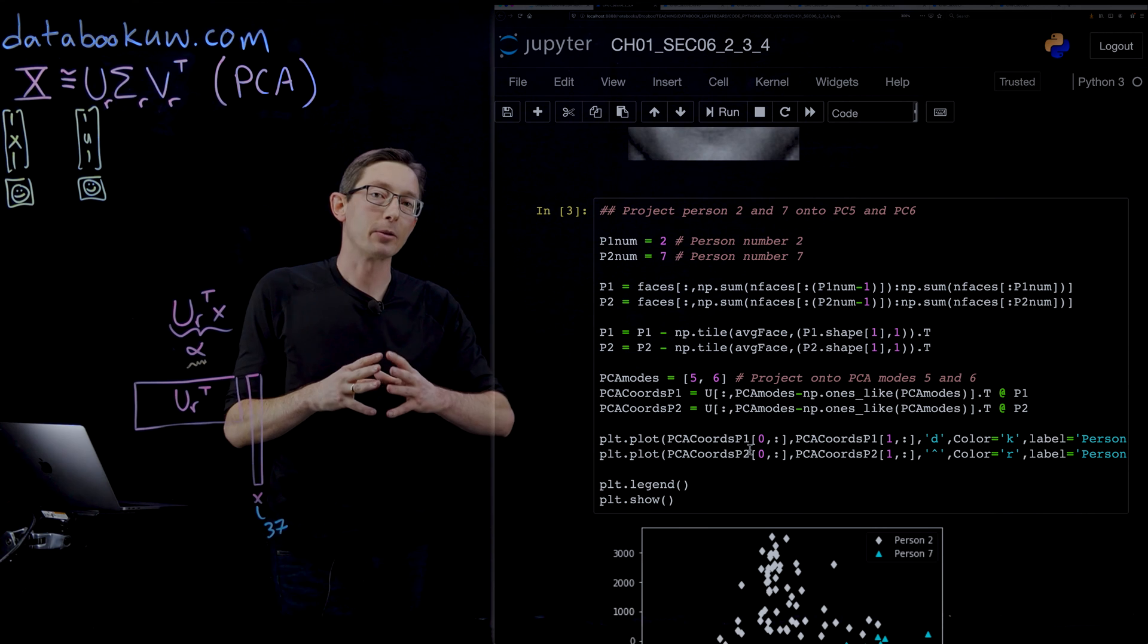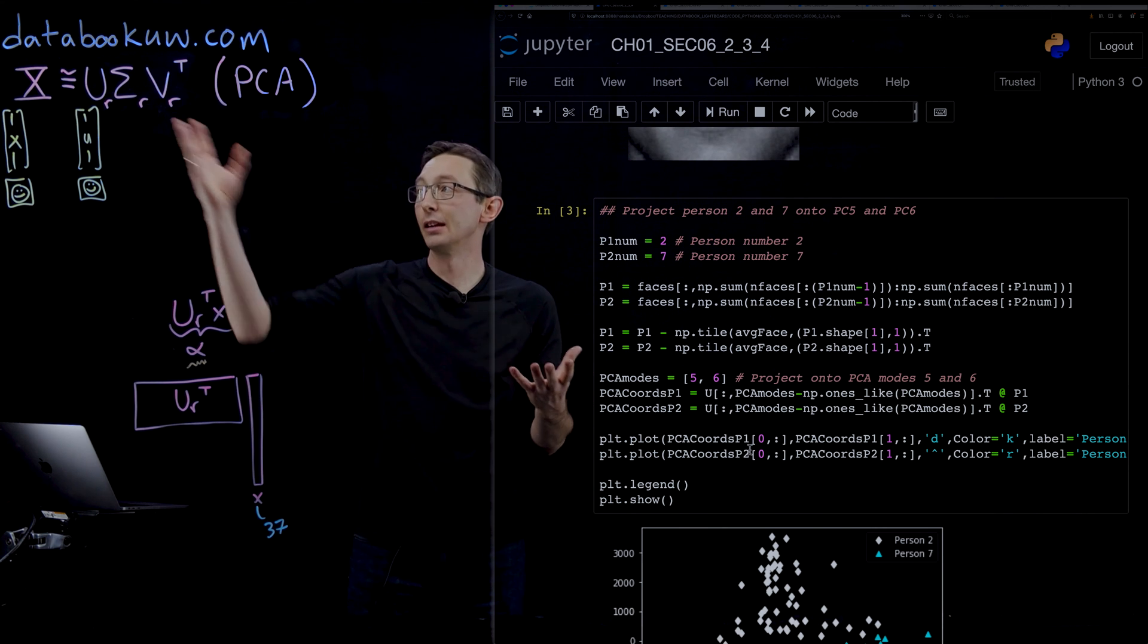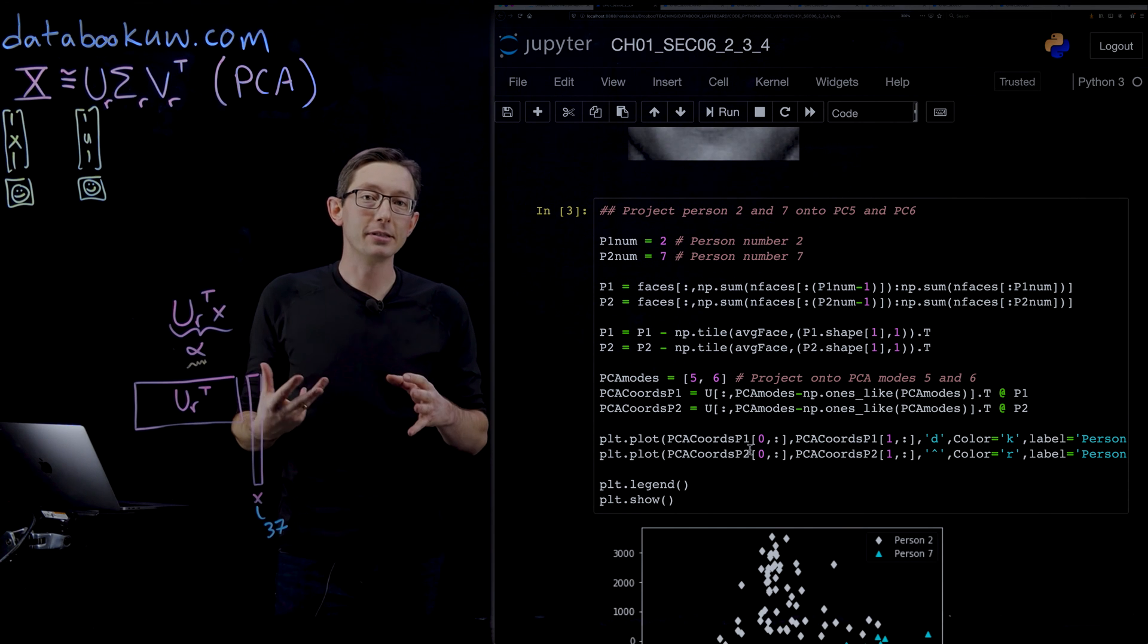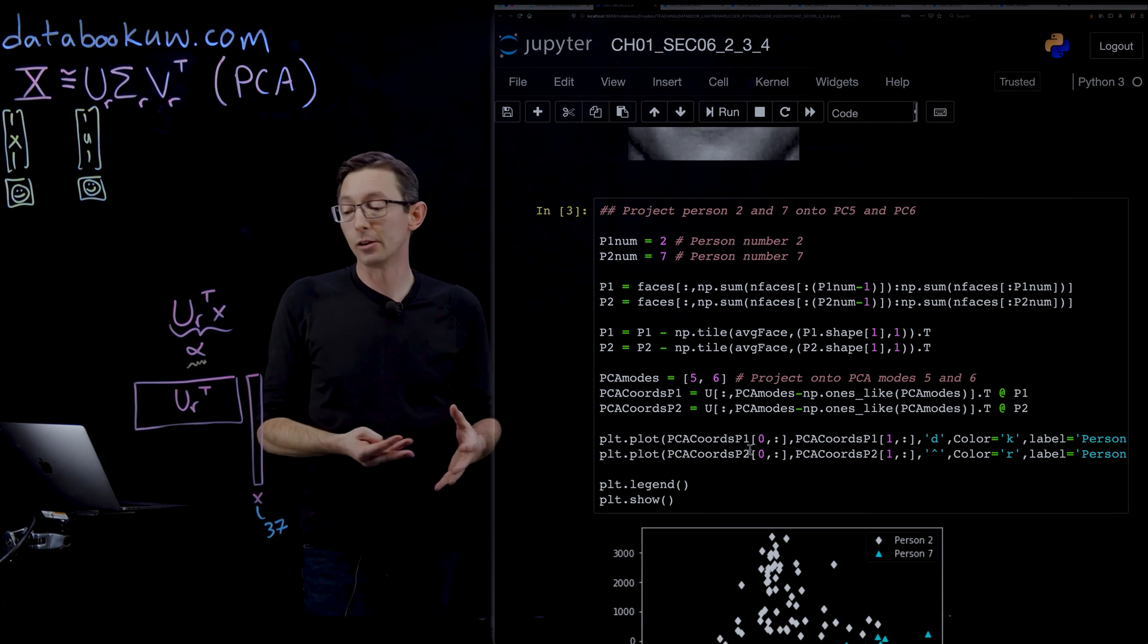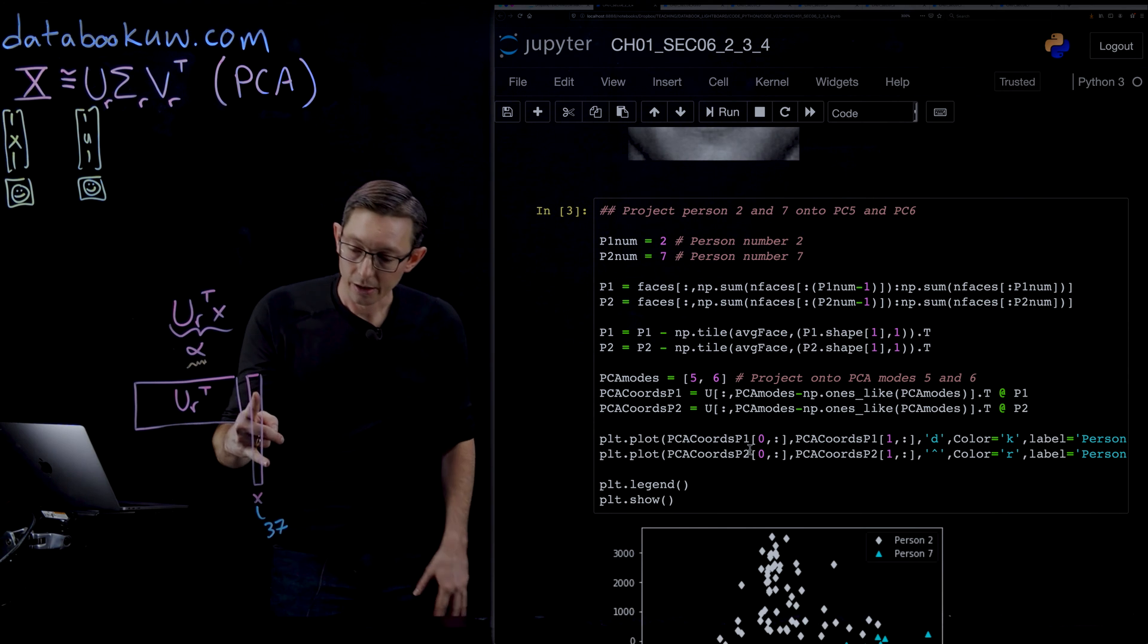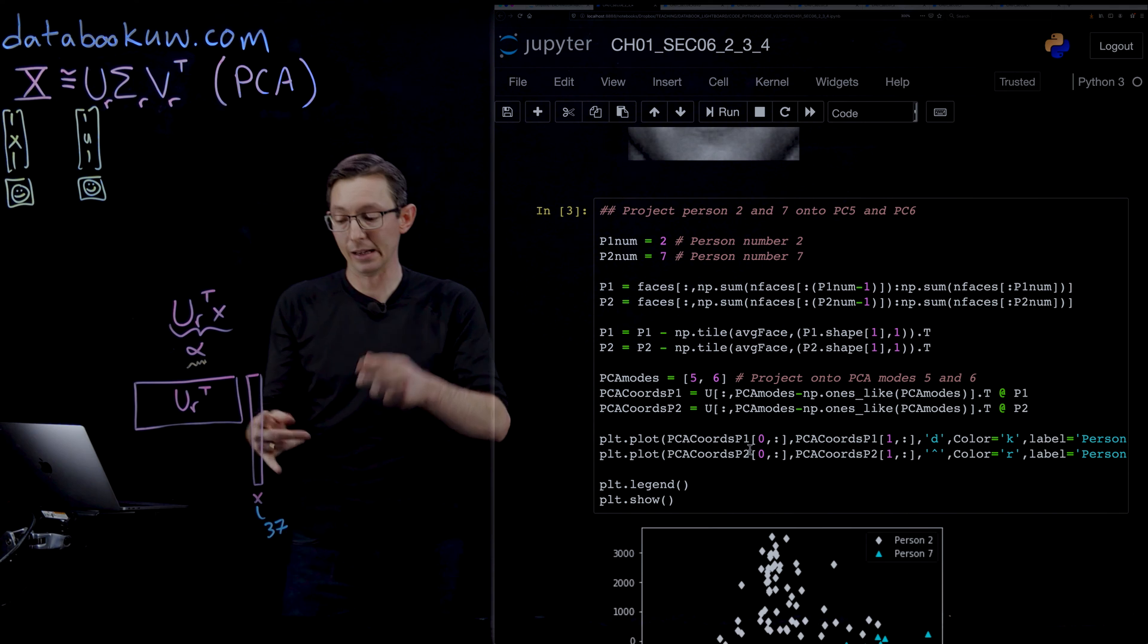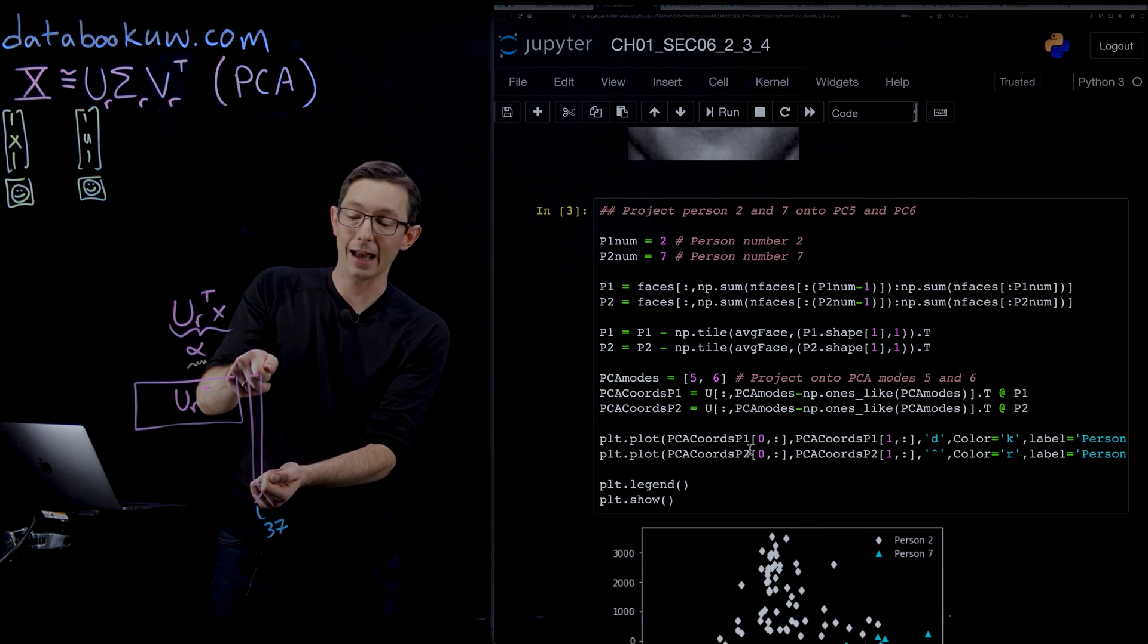What's really neat about this is that you can use this for image classification. So if you have an image X, instead of doing classification in a high-dimensional maybe megapixel image space, what you can do is take that image X and project it.